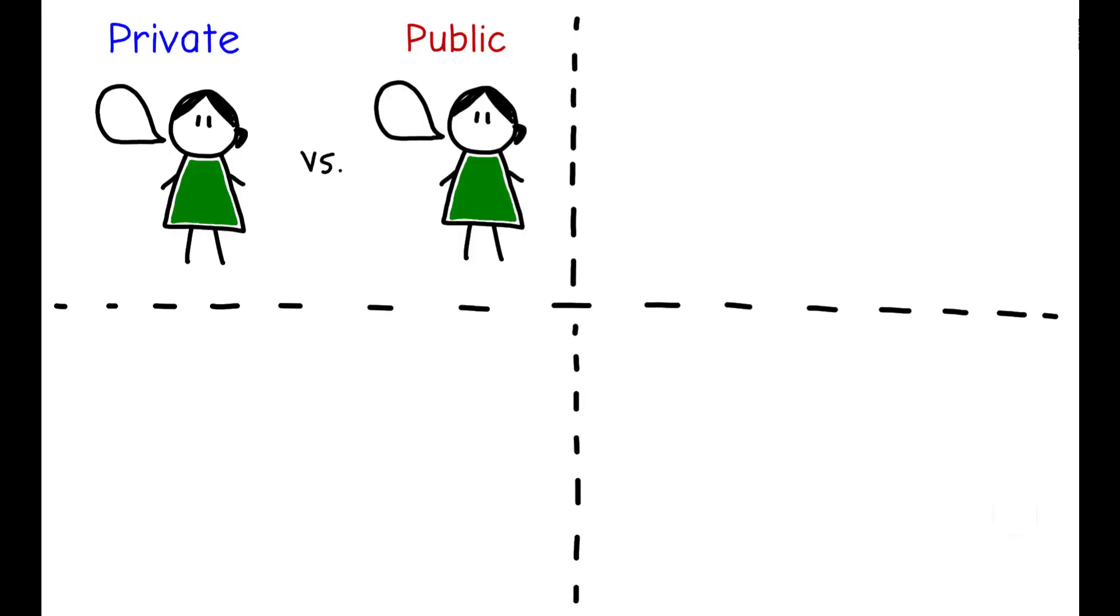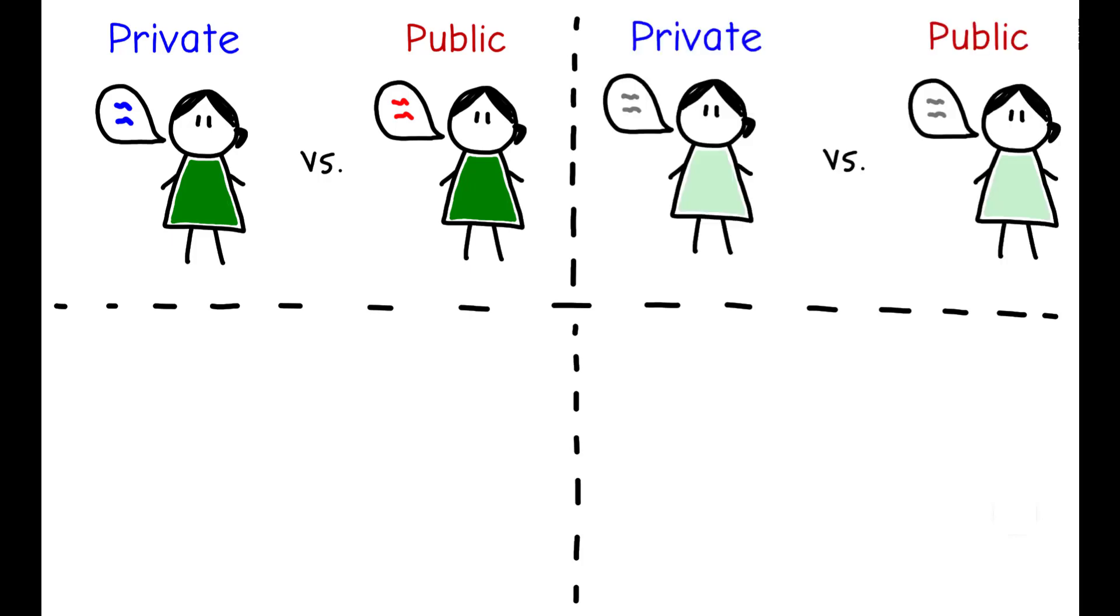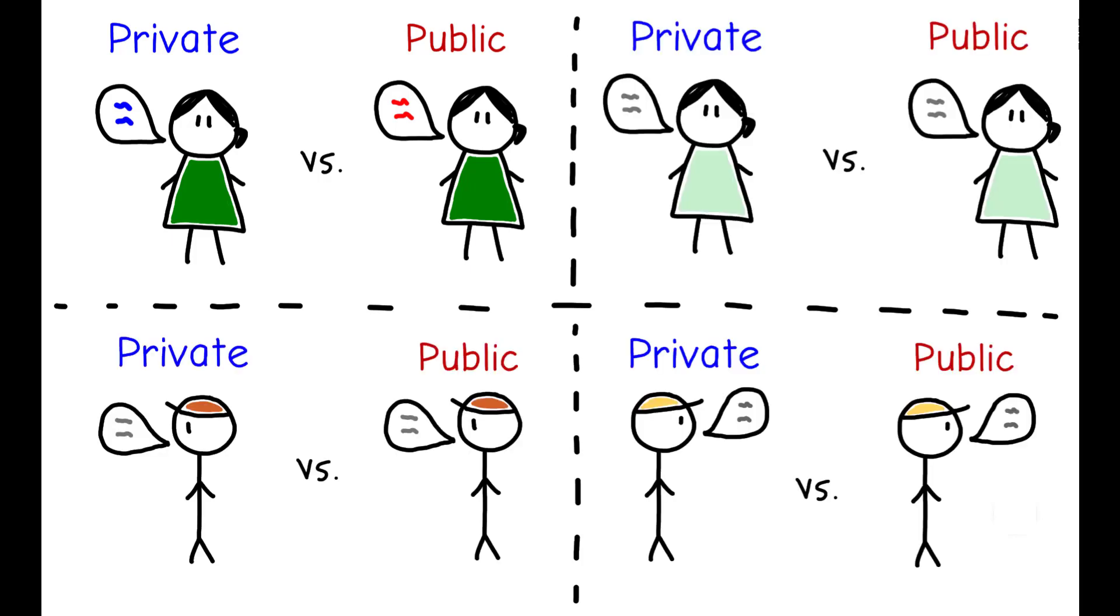These results suggest that when they expect their answers to be public, single women change their responses in ways that make them look less appealing to the labor market in order to avoid signaling negative traits to potential partners. In contrast, the authors find that non-single women and men behave similarly regardless of whether they expect their answers to be public or private.